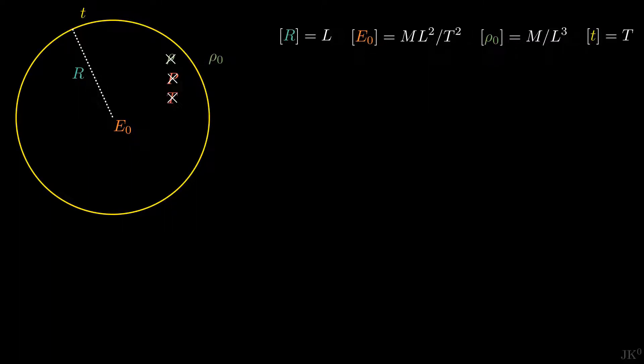Now comes the magic of dimensional analysis. We write the variable of interest, r, the radius of the blast wave, as a function of all the other variables. And we combine them to give us the right dimensions. For this we take each variable and elevate it to a different exponent in the following way. We write r equals a constant, that we call s, times E0 to the power of a, rho0 to the power of b, and time to the power of c. And now we search for the values of the unknown exponents a, b, and c that give a consistent equation.